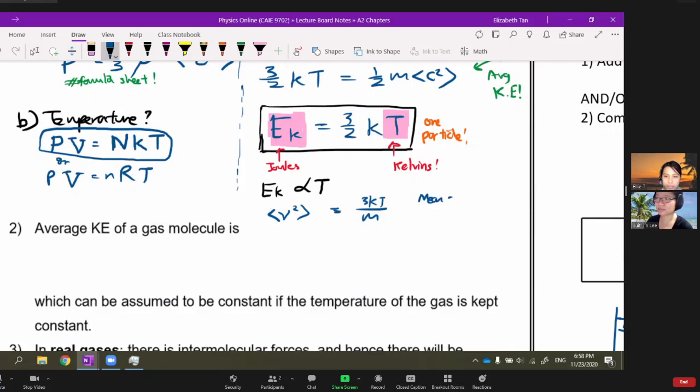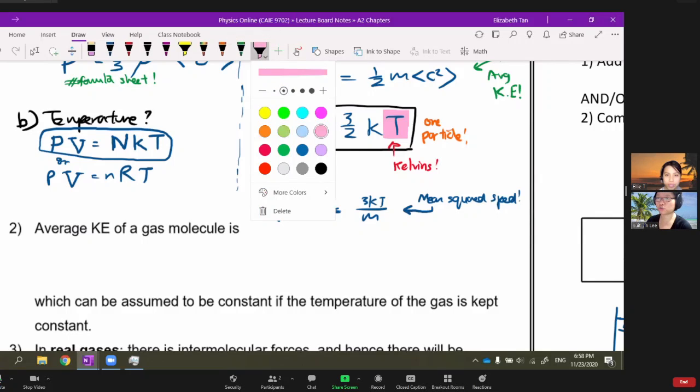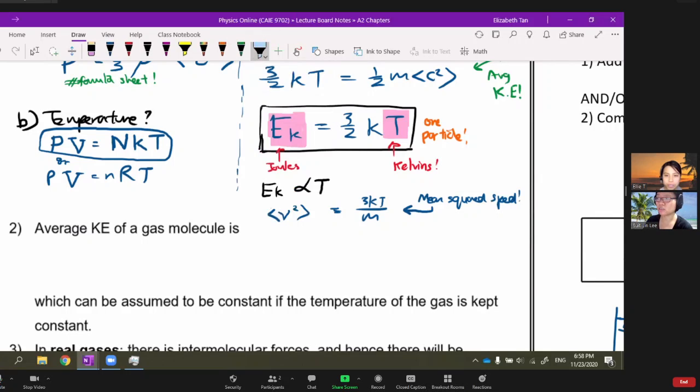Good news: your gas sample only has one gas, we don't mix gases, that's chemistry. The mean square speed is equal to this, so 3k/m is constant, therefore v² is proportional to T.